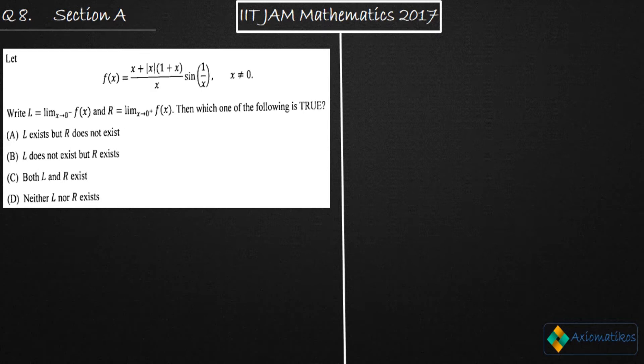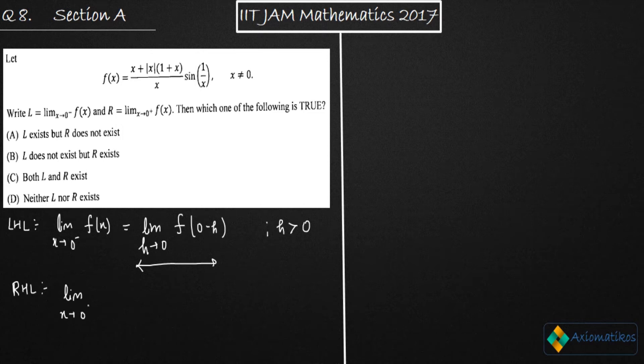You have to find out the left hand and right hand limit for this given function f. So firstly I will evaluate left hand limit. Now left hand limit is represented as x goes to zero minus of f(x). If h is a number which is greater than zero, then this limit can be converted into another form which is limit h goes to zero f of zero minus h, where h is greater than zero. This is the representation for the left hand limit.